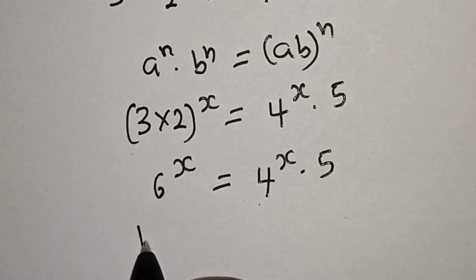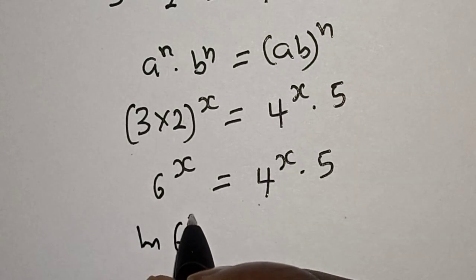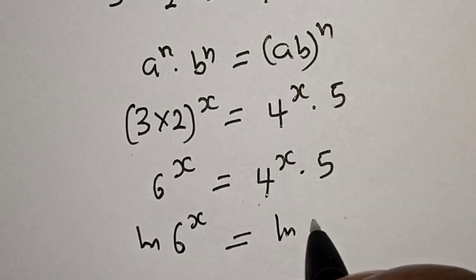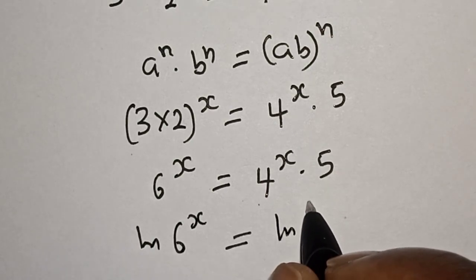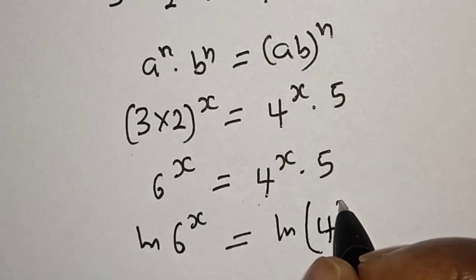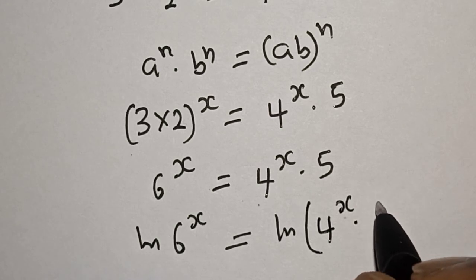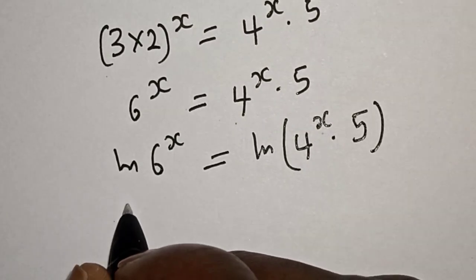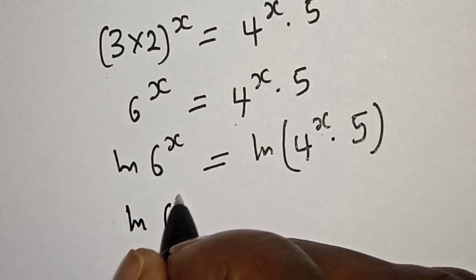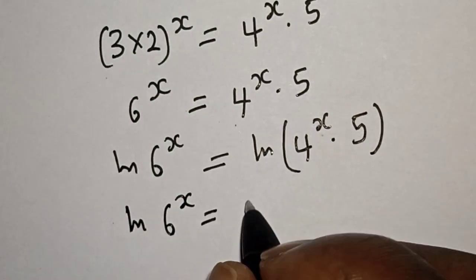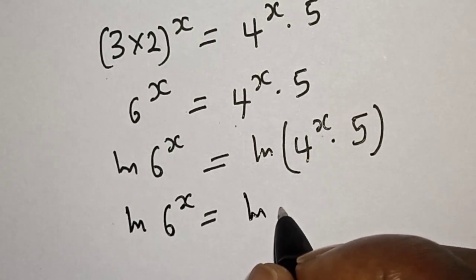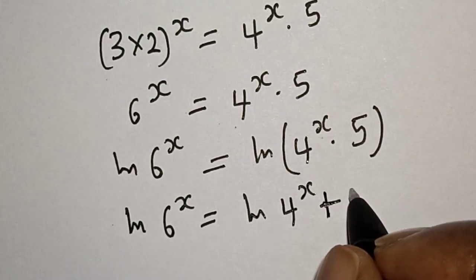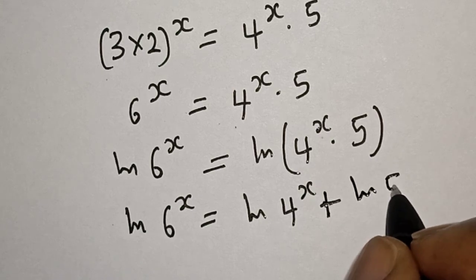Then natural log of 6 to the power of x is equal to natural log of 4 raised to power x multiplied by 5. Expanding: x·natural log of 6 is equal to x·natural log of 4 plus natural log of 5.